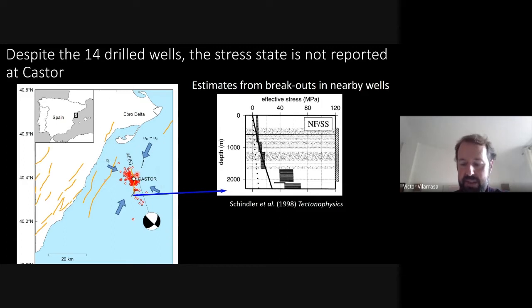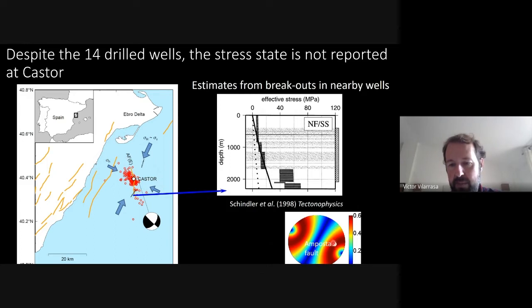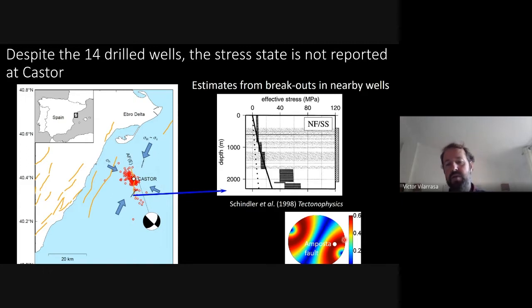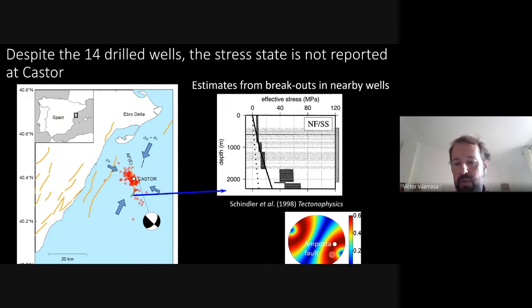The stress state is critically stressed, as evidenced by the region's natural seismicity. A slip tendency analysis shows the Amposta fault falls in the critically stressed region — with values around 0.6, near the friction coefficient typical for rocks and fractures. This means small stress perturbations can reactivate these faults.